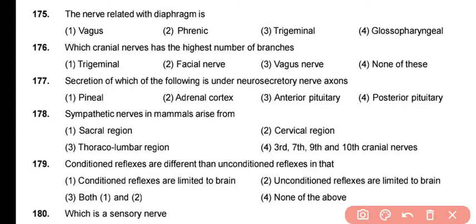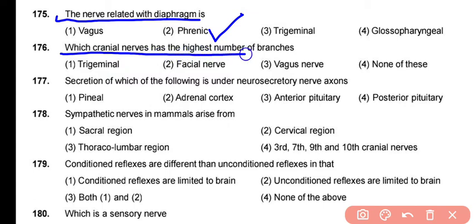Question 175: The nerve related to the diaphragm — the phrenic nerve — arises in the neck region. The correct answer is option 2. Question 176: Among the given options, the vagus nerve has the highest number of branches. The correct answer is option 3.